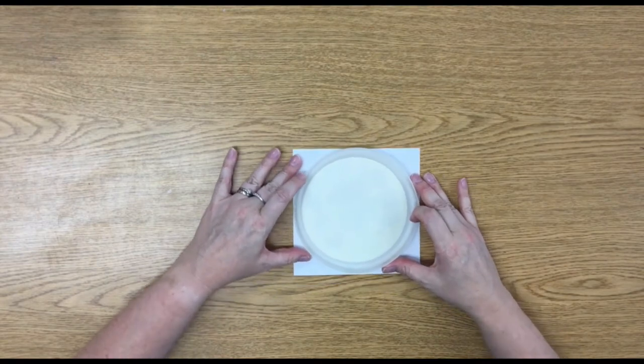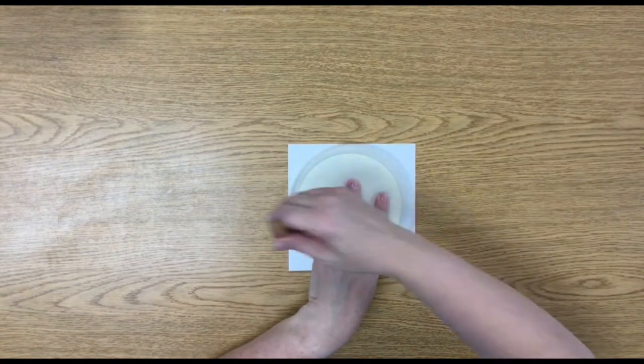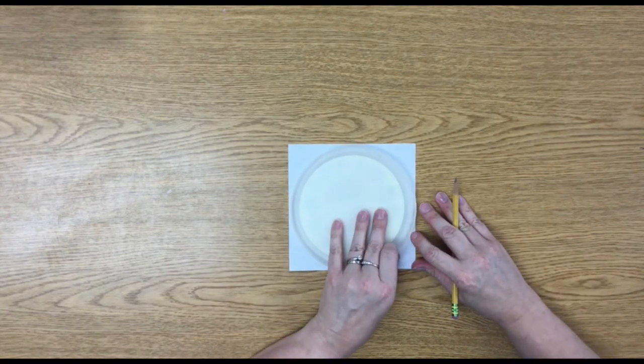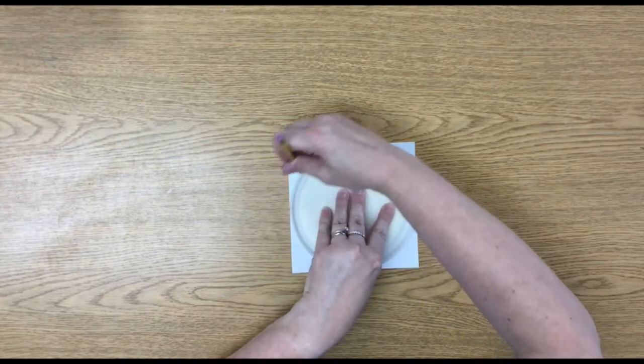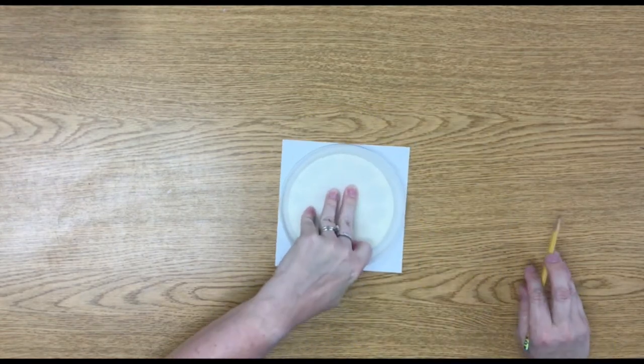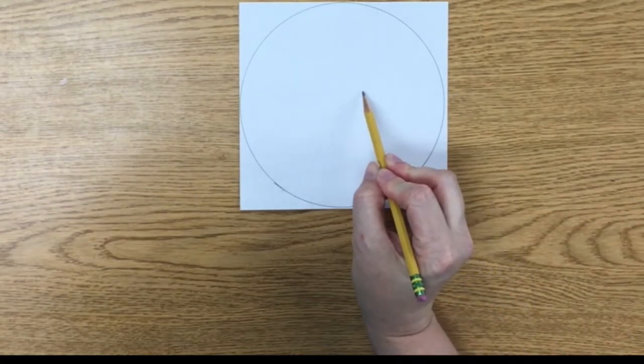With pencil, trace your circle onto the white paper. It is okay if the circle is a little bigger than the paper or even a little smaller. The circle is your distant sun setting.